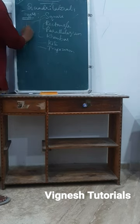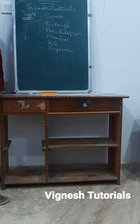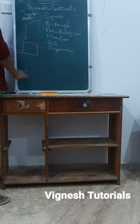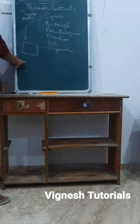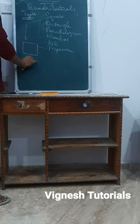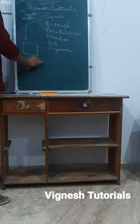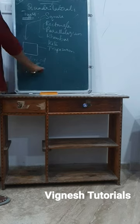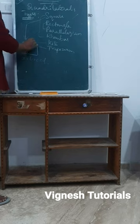In a square, the condition is every side is equal — a equal to b equal to c equal to d. The sides are equal.